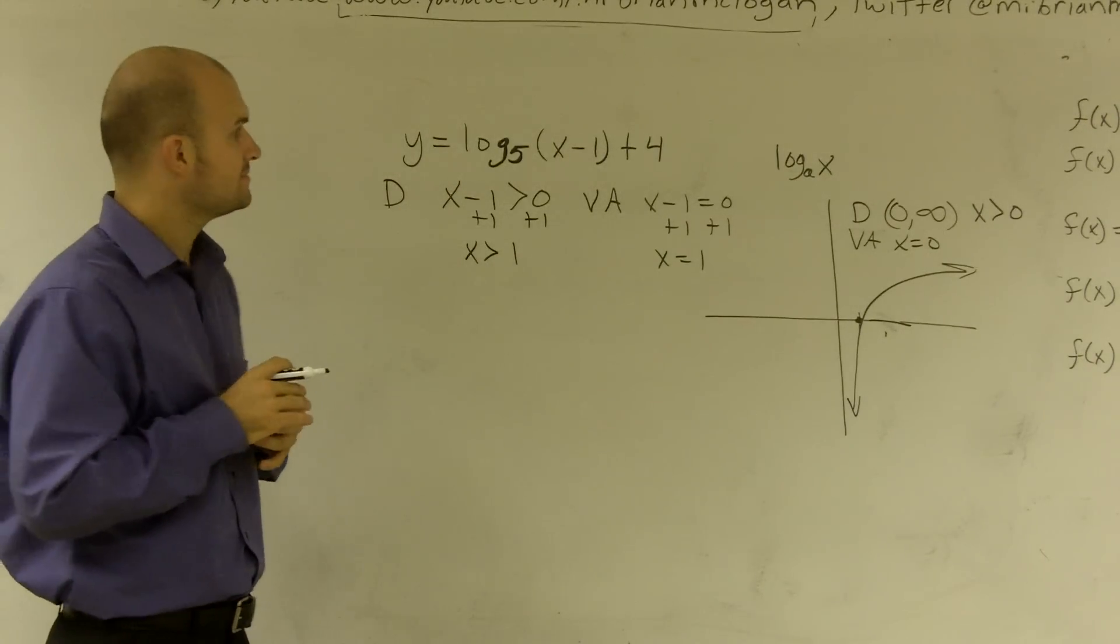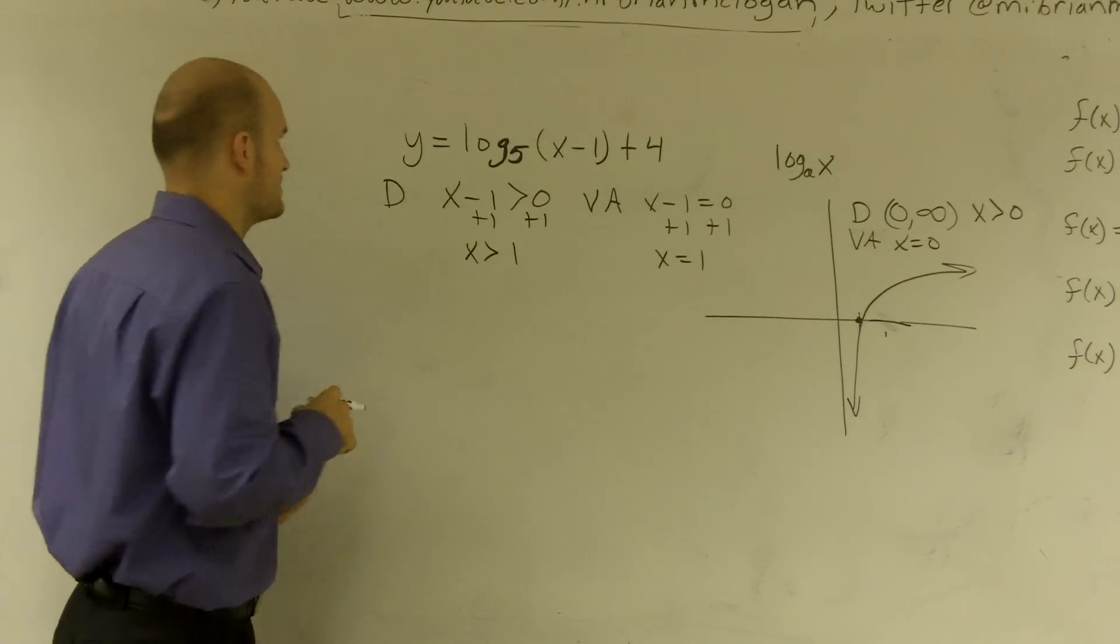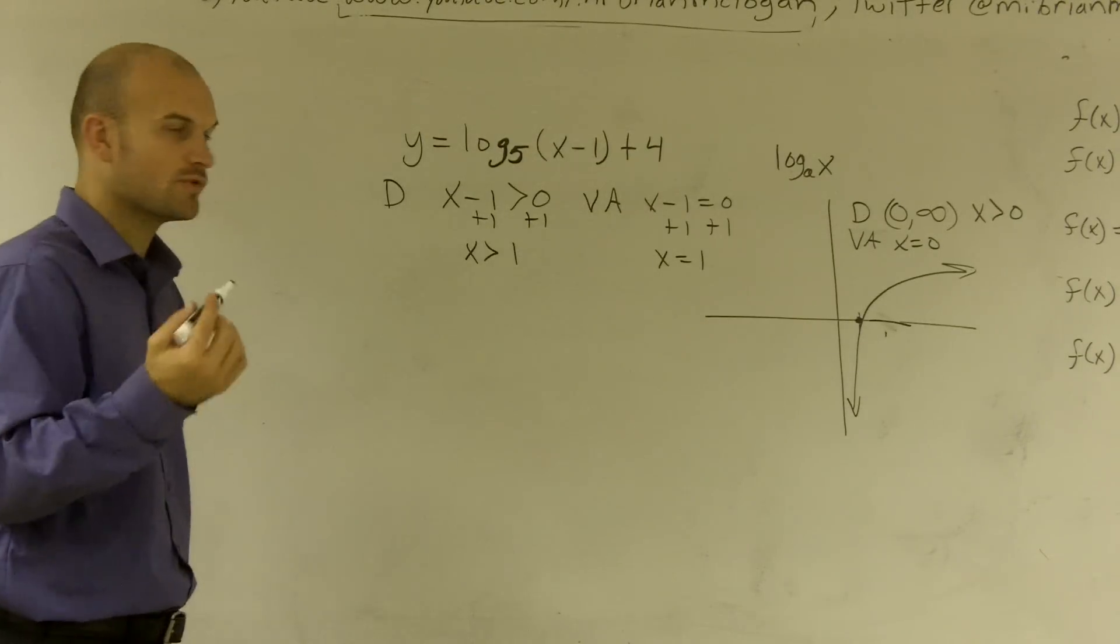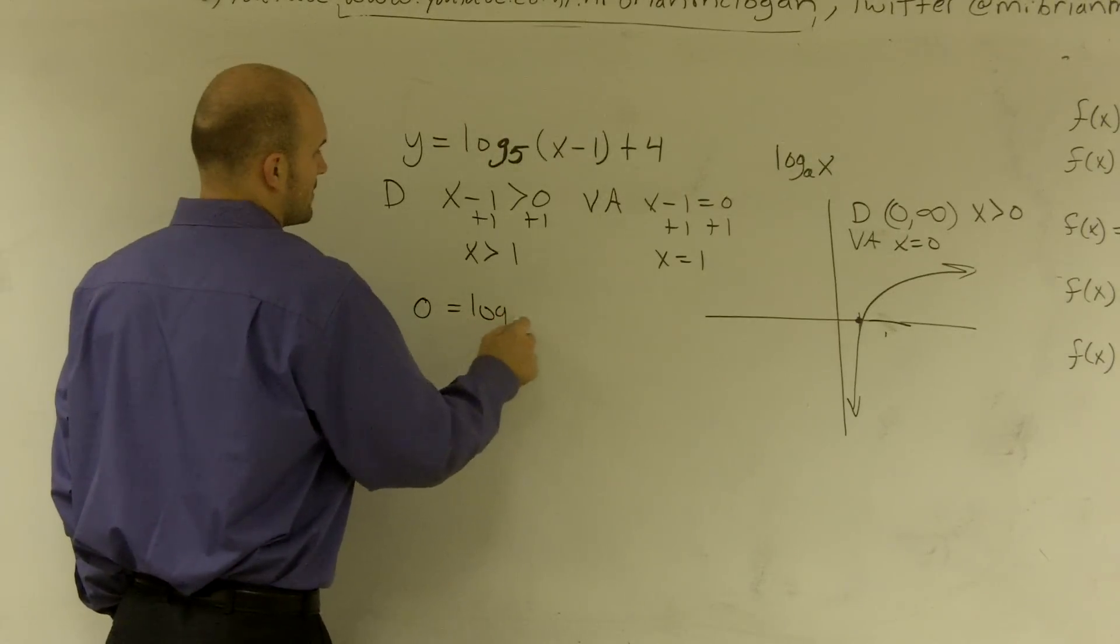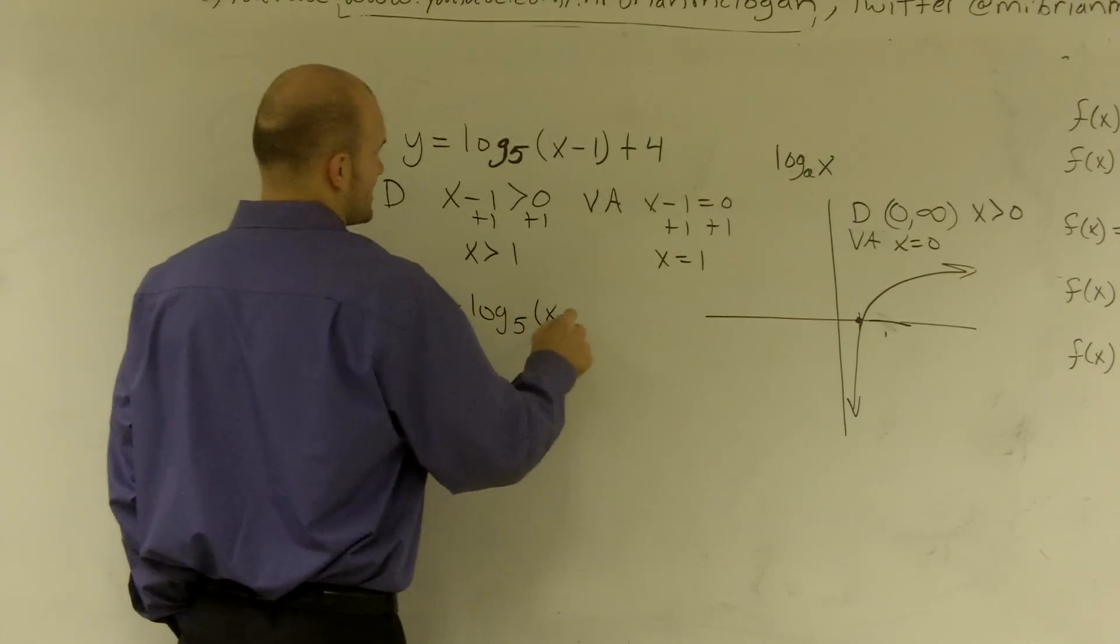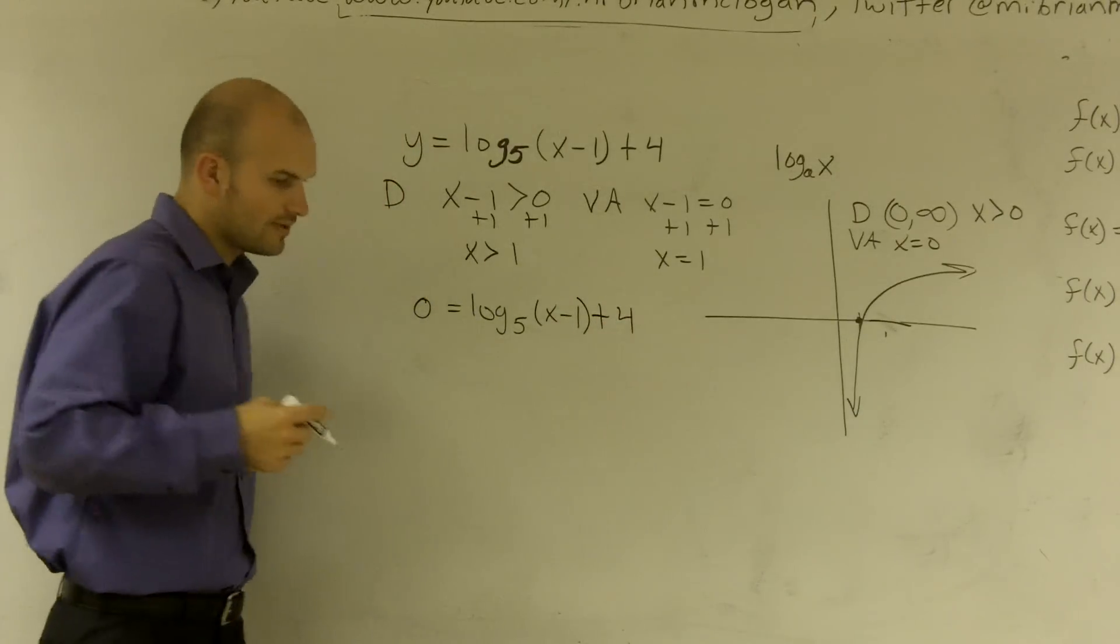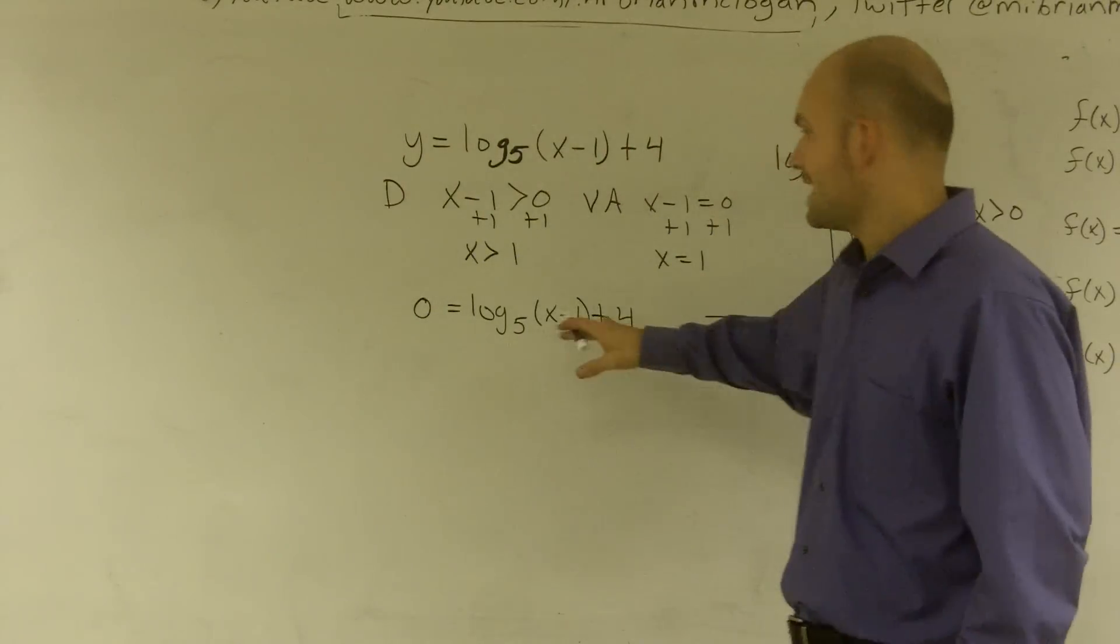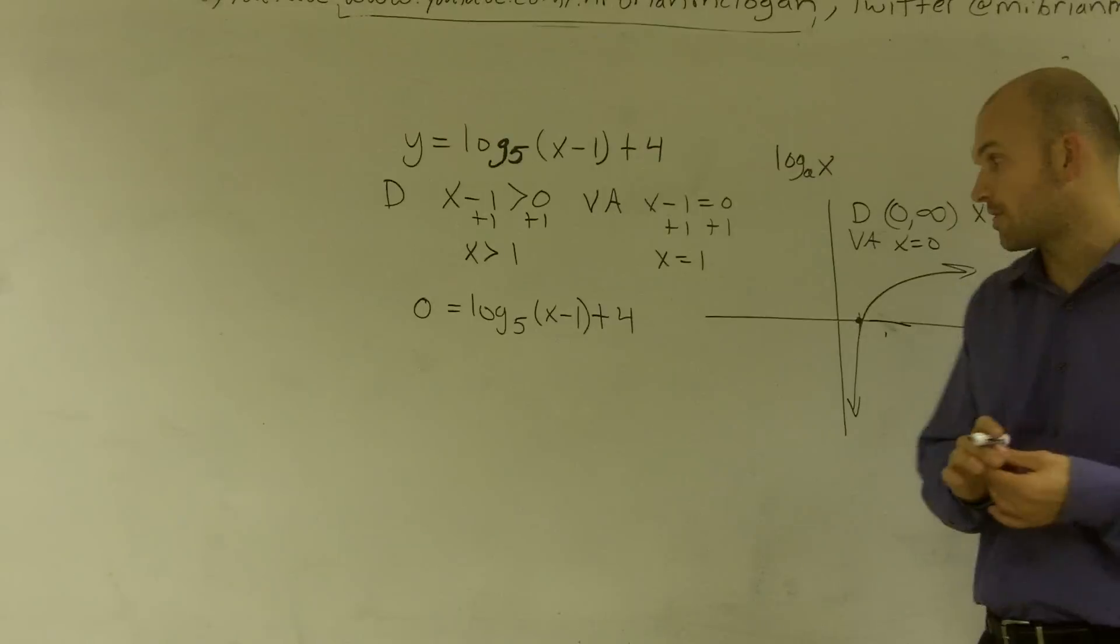Now I need to find my x-intercept, which is when y equals 0. So I'm going to say 0 equals log base 5 of (x minus 1) plus 4. To solve for x when I have a log, I can transfer this to exponential form.